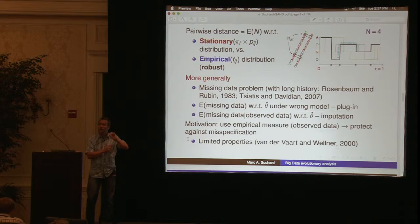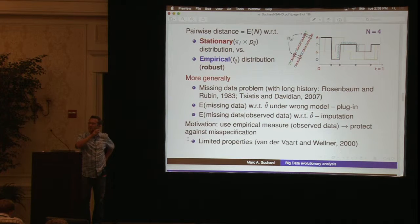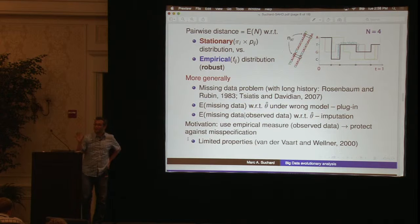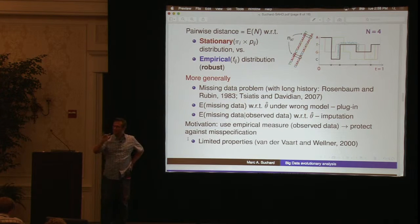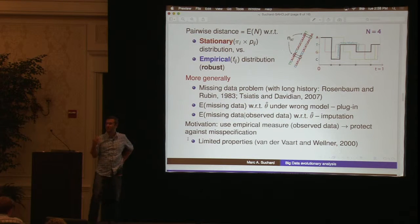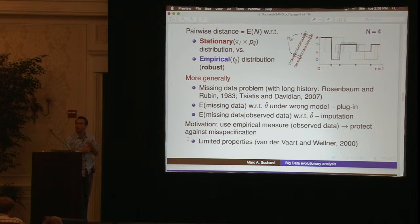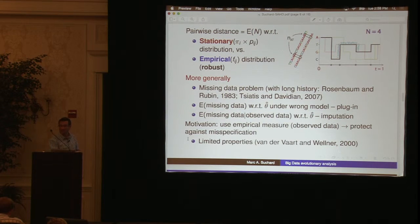I might replace the first expectation with the sum over my observed data, and that converges to some new plug-in estimator. How accurate your answer is has to do with the distance between those two values, and that's going to be dependent on whatever your simple model is. I've been working for a couple of years on getting some better results on how close you can get — and that's a hard problem.